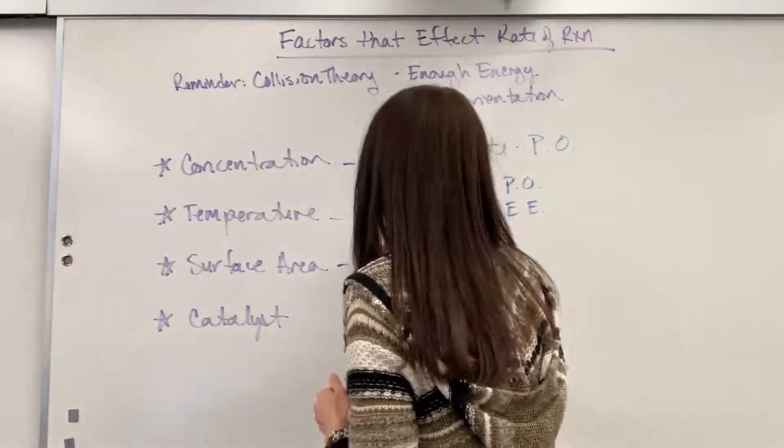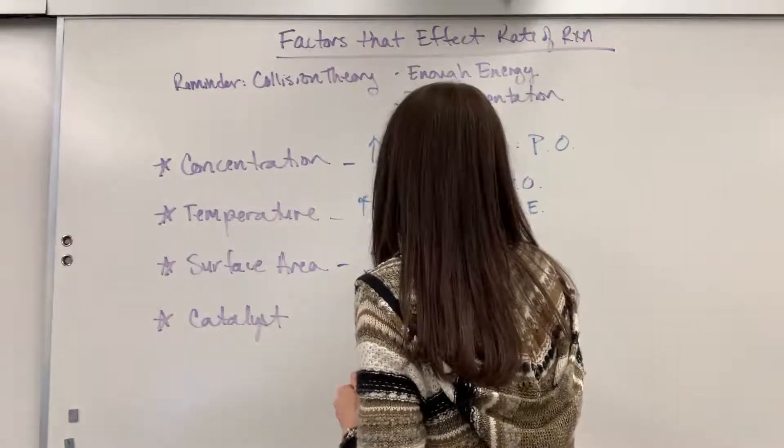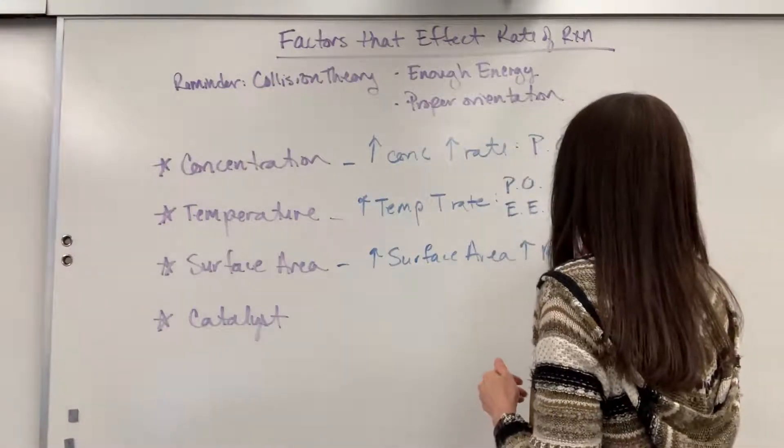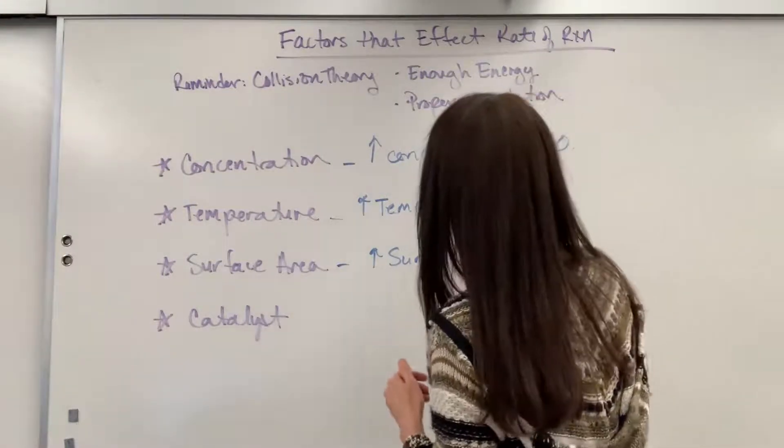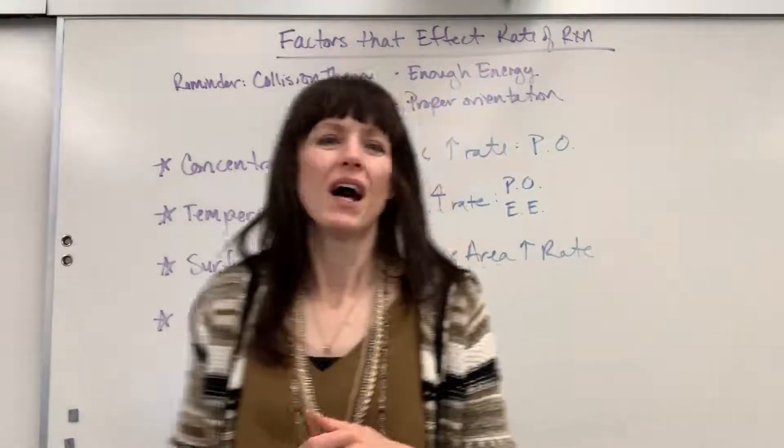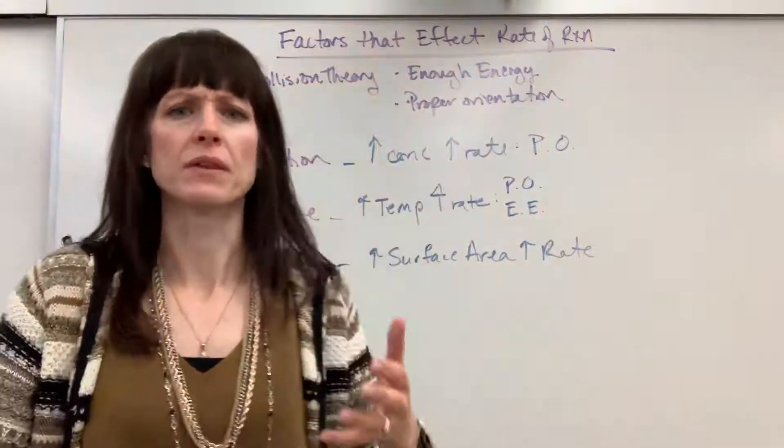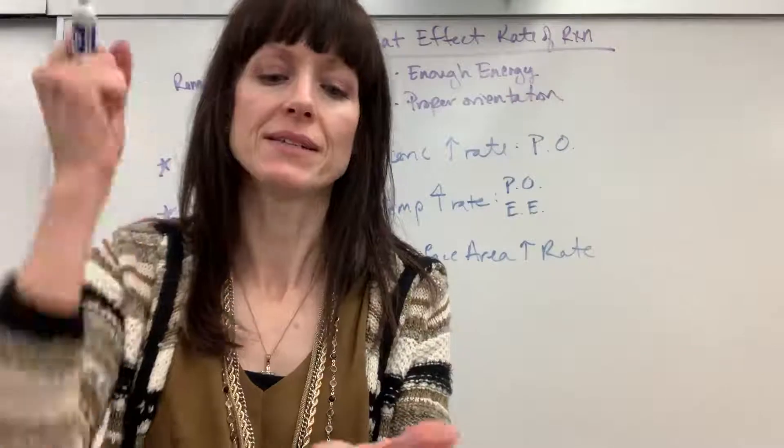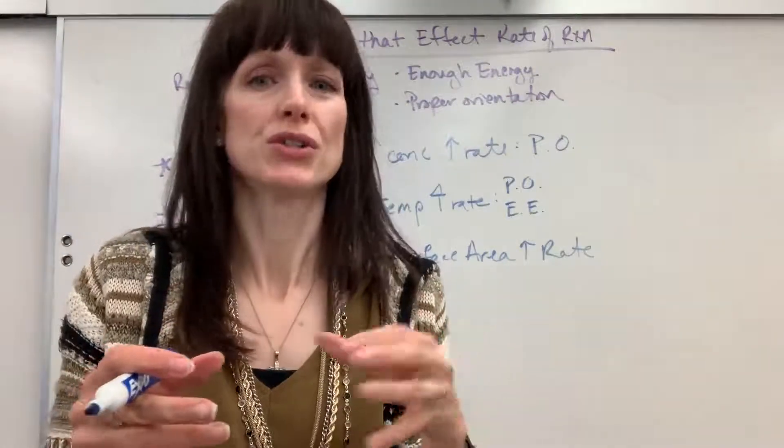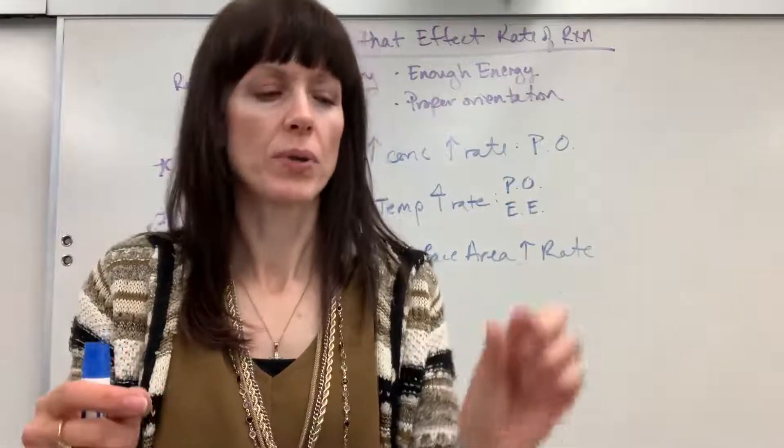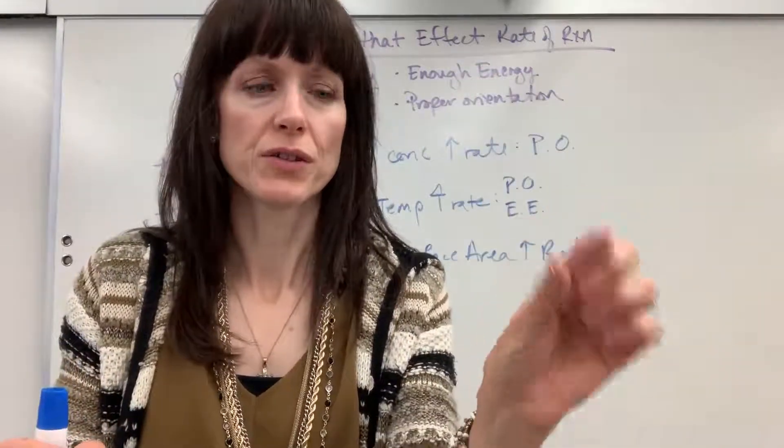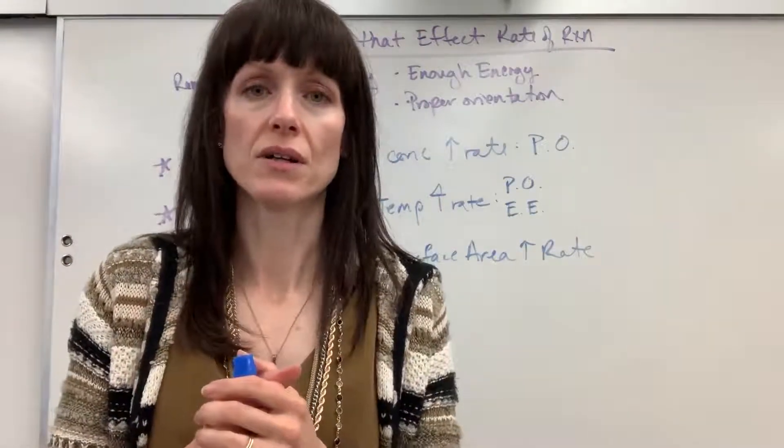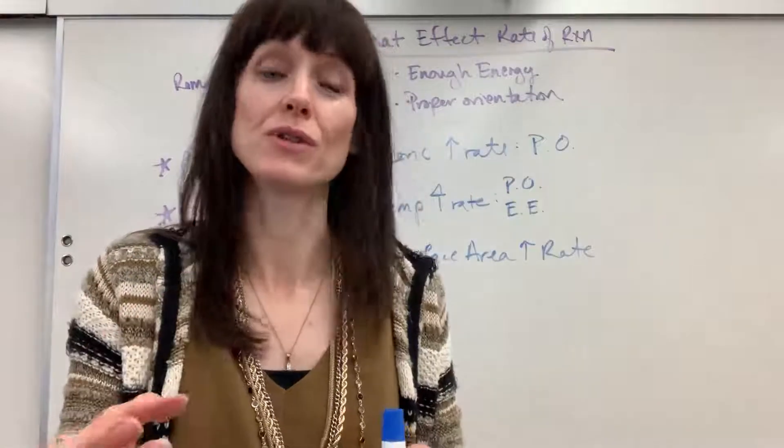Okay, surface area. If we increase the surface area, we are also going to increase the rate. Think about this with me. Let's have one gram that's a sugar cube, so a little square. And then let's have one gram that is a crushed sugar cube, so we have all this granular sugar. I'm going to take two cups of tea. I'll put the cube of sugar in one and the granular sugar in the other cup. Which one's going to dissolve faster? Well, you and I know it's the one that's been crushed, the granular sugar.